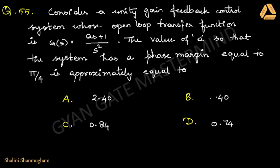G(s) = (as + 1) / s². The value of 'a' such that the system has a phase margin equal to π/4 is approximately equal to — they have asked to find the value of 'a' for the given open loop transfer function, with the phase margin given as π/4.